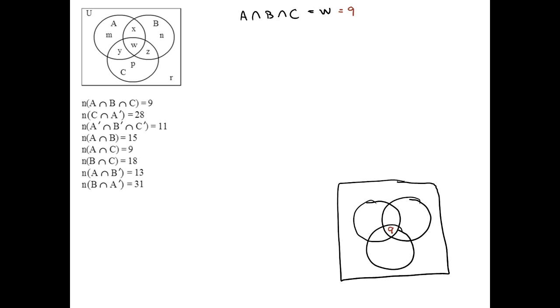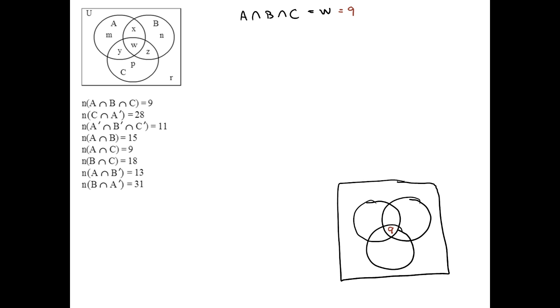Now, the next piece of information says C intersect A complement. You can either put it in words. I recommend doing the following though. You would like for it to be in C and at the same time not in A. If those words are enough for you to figure it out, that's great.